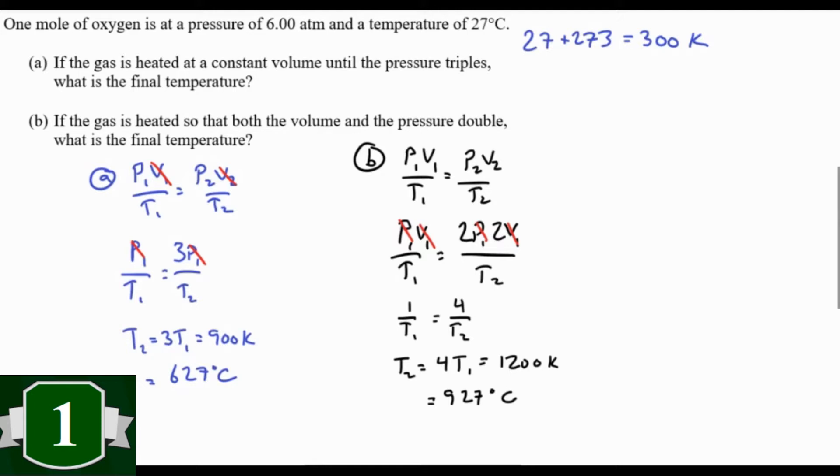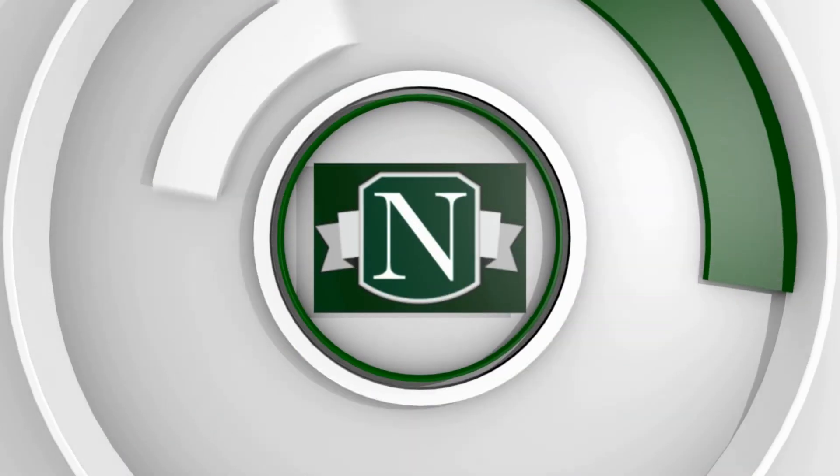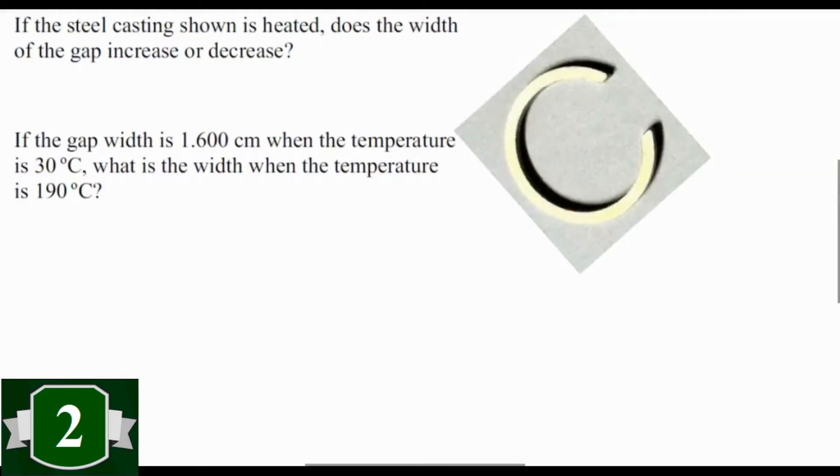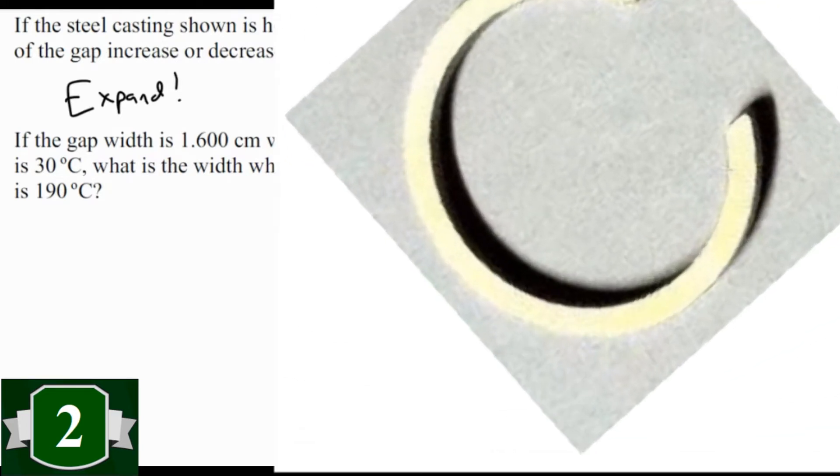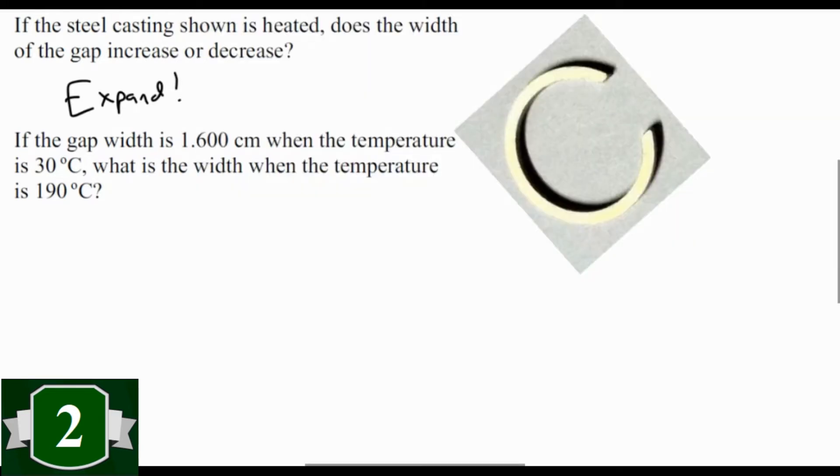Suppose you have a steel ring with a gap cut in it and you heat it up. What happens to the size of the gap? Well, it turns out that when the ring gets heated, the whole thing expands. And when that happens, it's like enlarging a picture on your phone. Everything gets bigger, and that means that gap will get bigger as if it were made of steel. You can actually do the math for it just like you would if it were a piece of steel. So let's do that next. If that gap is 1.600 centimeters when the temperature is 30 degrees, what is the width when the temperature is 190 degrees?